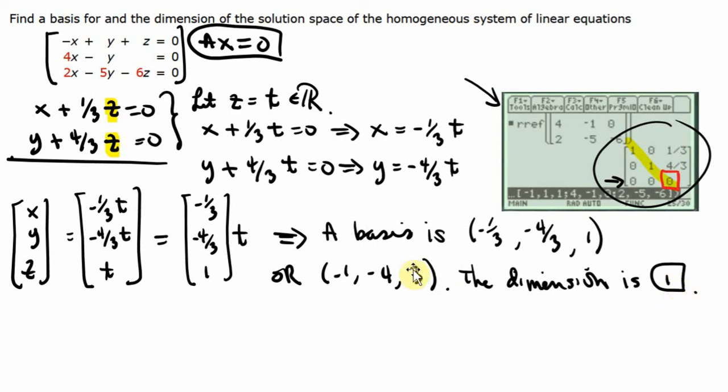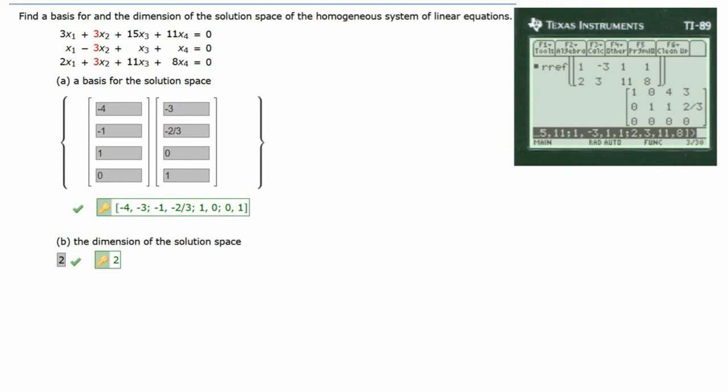Now let's see how that plays out for another problem that's a little more in-depth. It asks the same question: find a basis and the dimension for the solution space of the homogeneous system. It's homogeneous because the terms here are all zero. Same setup as before—solving AX equals zero.